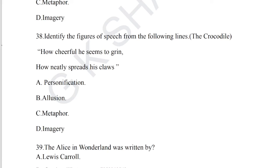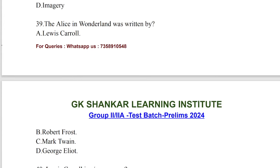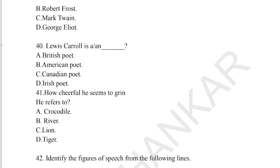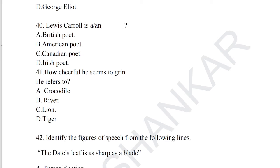Question number 39: 'Alice in Wonderland was written by Lewis Carroll.' Option A is the correct answer for question number 39. Question number 40: Lewis Carroll is absolutely a British poet — not American, Canadian, or Irish. He wrote Alice in Wonderland and also the poem Crocodile. Option B is the correct answer for question number 40.